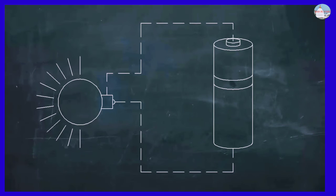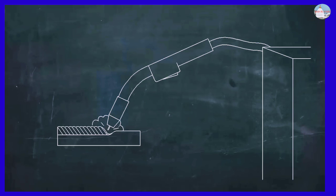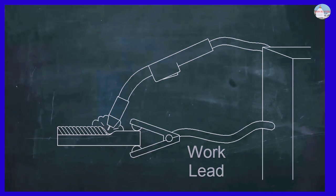In an electric circuit, the current flows in a loop. In MIG welding, the current has to flow in a complete circle from the machine, to the torch, into the work, and back to the machine. A work lead is clamped to the work to complete the circuit from the workpiece back to the machine.